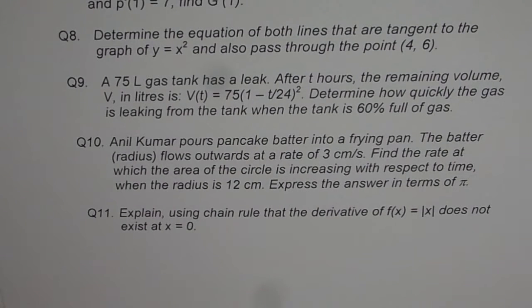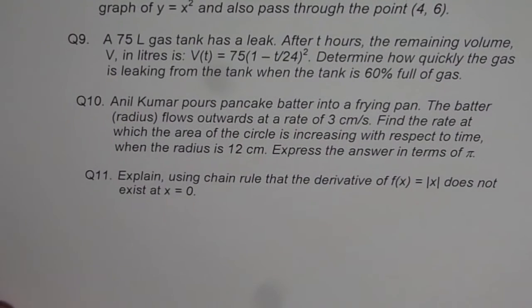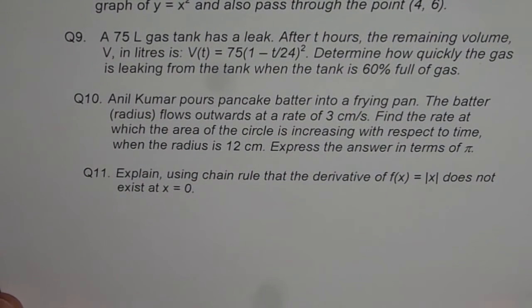The last question is very interesting. Question number 11, explain using chain rule that the derivative of f(x) equals to absolute x does not exist at x equals to 0. You have to explain using chain rule.